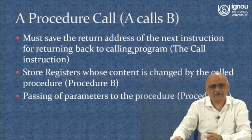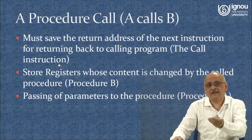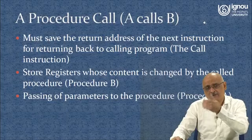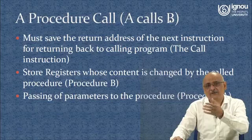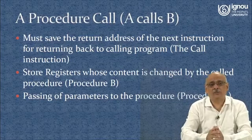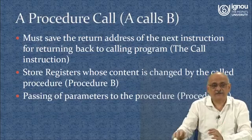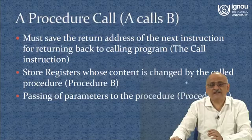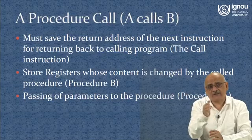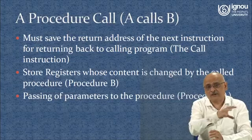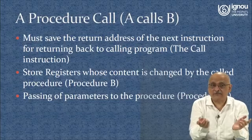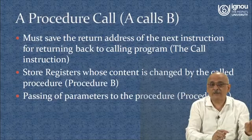So the call instruction will put the return address onto the stack. If A calls B and B calls C, then B's return address will be put onto the top of the stack. The return sequence will be: C returns to B — the top of the stack contains the return address back to B — and then B returns to A. That is how the forward movement and return basically takes place as far as procedure calls are concerned.